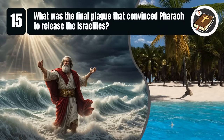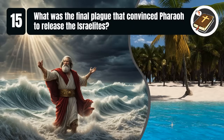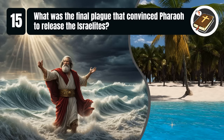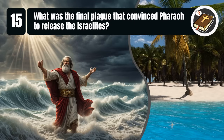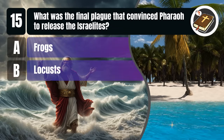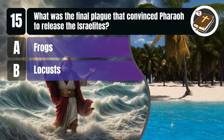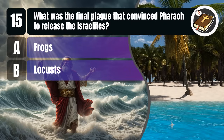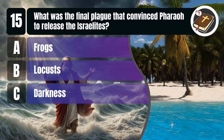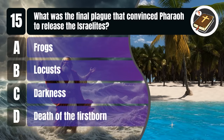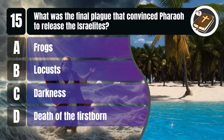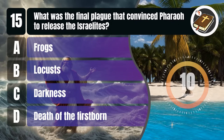Question 15. What was the final plague that convinced Pharaoh to release the Israelites? A. Frogs, B. Locusts, C. Darkness, D. Death of the firstborn. You get 10 seconds.